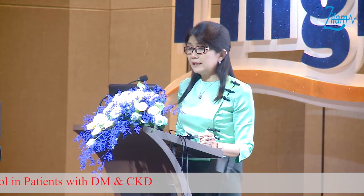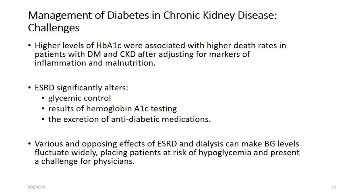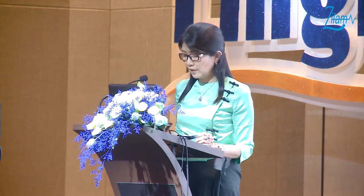What are the challenges in the management of diabetes in chronic kidney disease? Higher levels of HbA1c are associated with higher death rates in diabetes and CKD after adjusting for markers of inflammation and malnutrition. ESRD also alters glycemic control, causing A1c testing to under- or overestimate true values, and excretion of antidiabetic medications can be altered by end-stage renal disease. Various and opposing effects of ESRD and dialysis can make blood glucose fluctuate very widely, putting the patient at risk of hypoglycemia, which is very challenging for physicians.